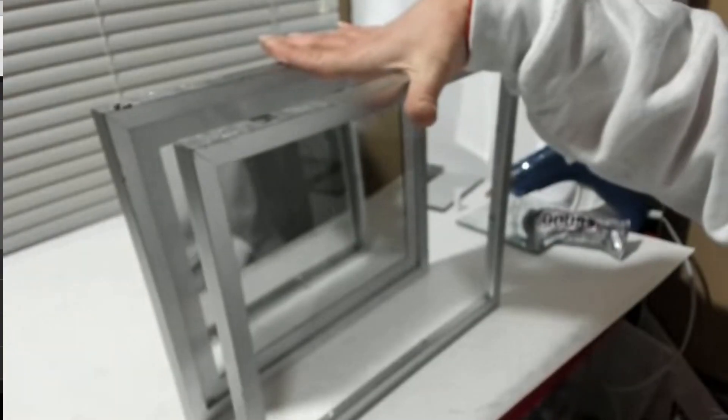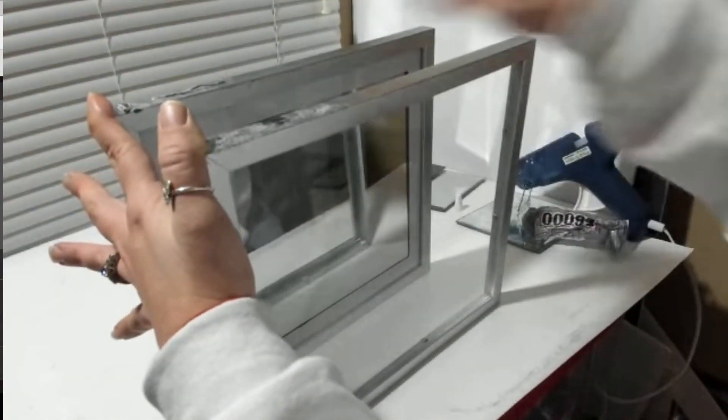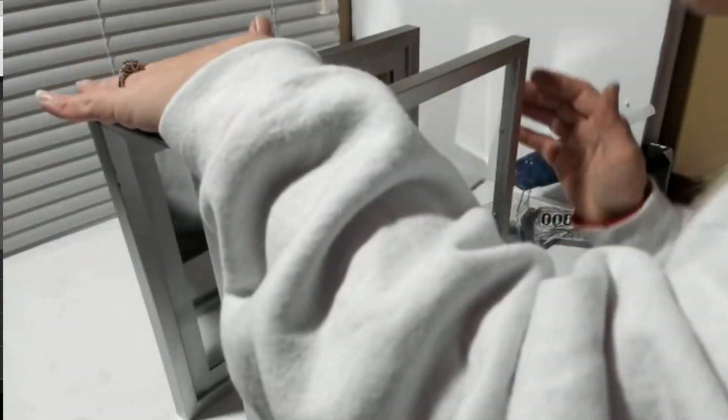So I started using E6000 to glue the mirrors on top of the picture frames but it didn't really stick good, so I went with some hot glue. I glued one mirror on one side and another mirror on the other side.